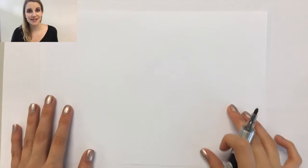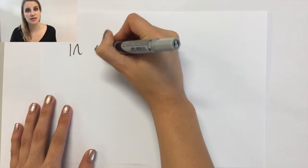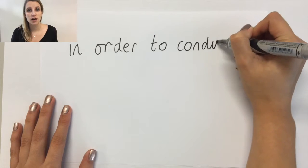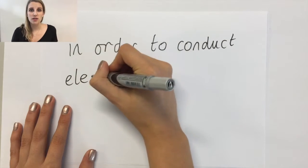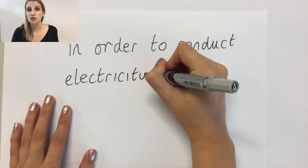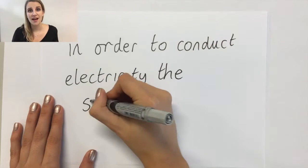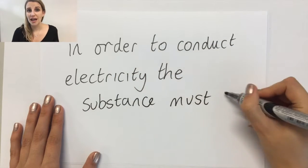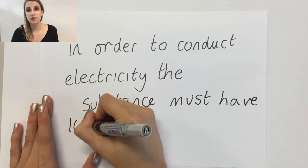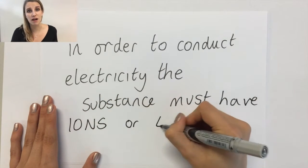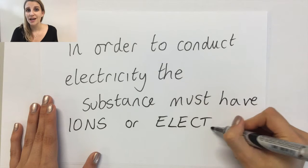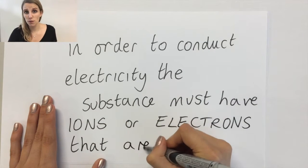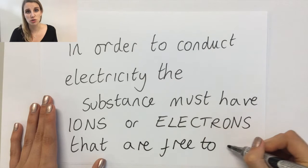First of all, let's compare ionic and covalent substances and look at whether they conduct electricity or not. The first thing we need to think about is what actually causes a substance to conduct electricity — the substance needs either free electrons that are free to move within the structure to carry the charge, or it needs free ions, something that can move and carry the charge through the structure.